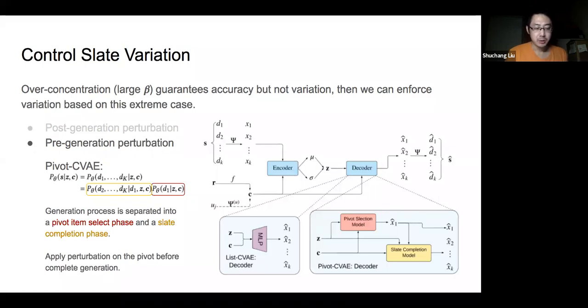When engaging perturbation, we only need to apply it to the pivot. And the majority of the generation still remains intact in the later slate completion model. Ideally, the model will learn to generate a satisfactory output even if the sampled pivot is bad. We denote this pre-generation perturbation method as pivot CVAE.